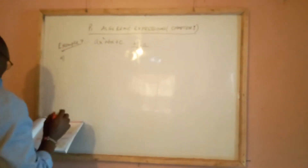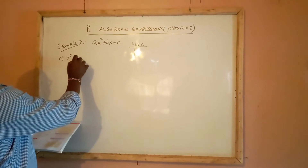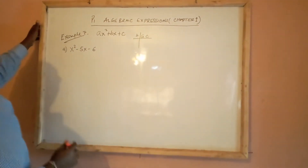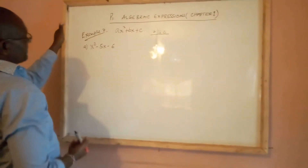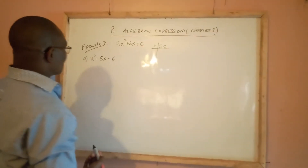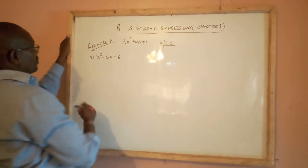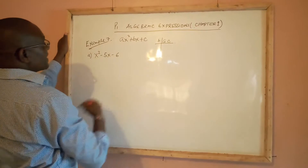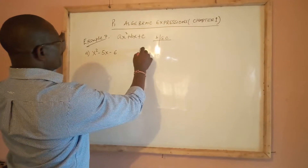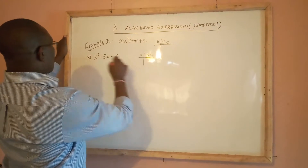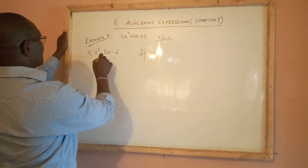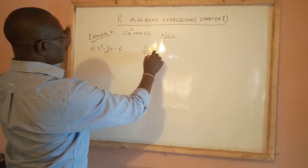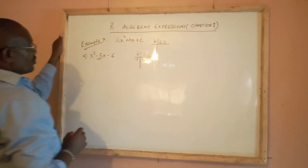We go straight to example 7 part a: x squared minus 5x minus 6. This qualifies as a quadratic expression because it has the highest power of 2. Here a is 1, c is negative 6, so our b is minus 5 and our ac is 1 times negative 6, which is negative 6.